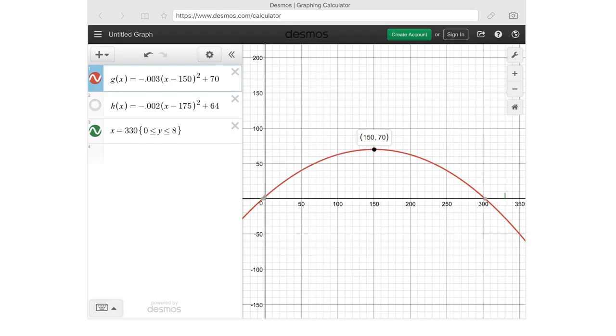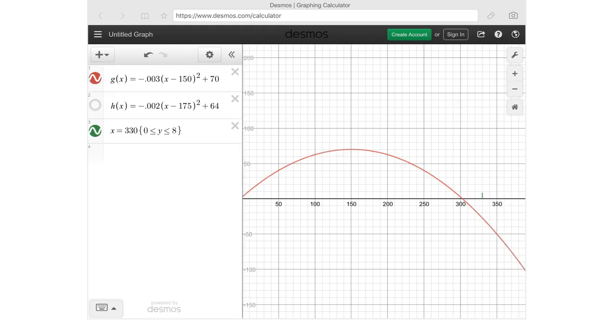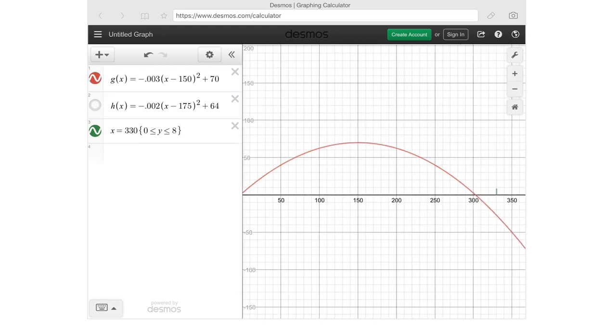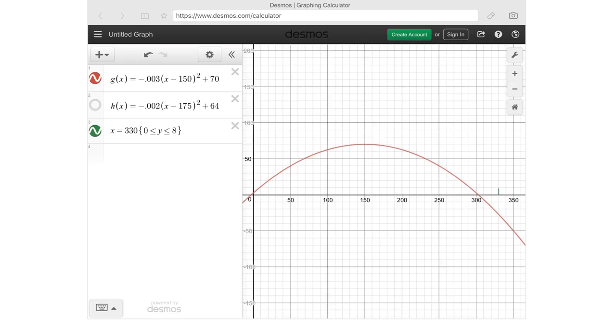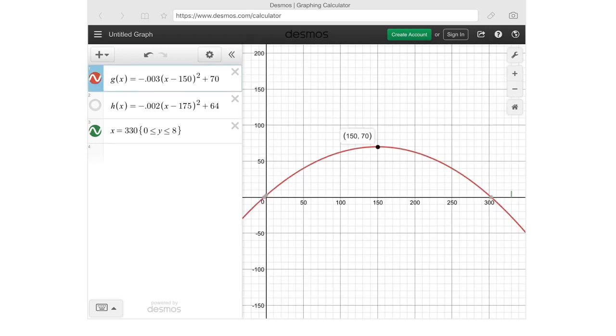I went ahead and typed in each function here. I even built a little function for our wall, so we can clearly see that Cespedes' hit is not going to be a home run. We can check the vertex that we found just by visually looking at the function. It is at 150, 70. Reaches a maximum height of 70 feet, 150 feet horizontally from home plate. What we were interested in was this value over here, which was the one positive root of this function. That's going to tell us our landing distance.